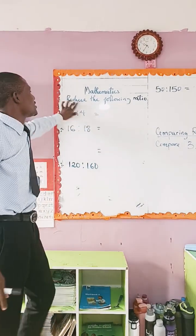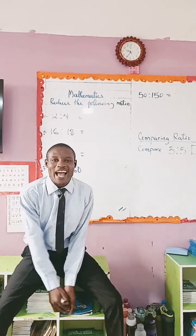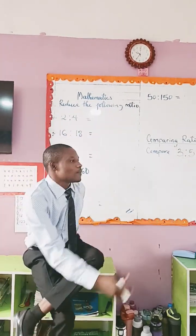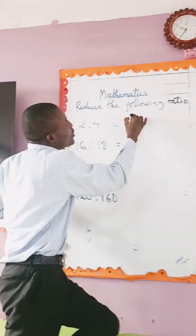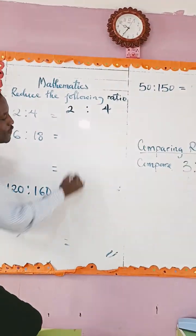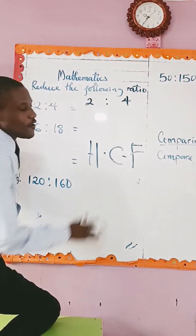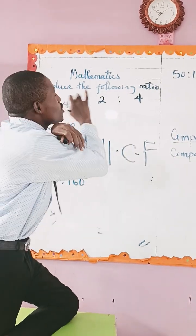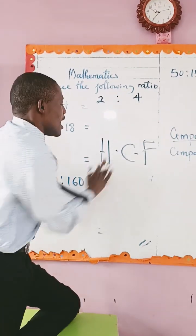We are looking at reducing ratios to their lowest form. So you have two numbers in ratio form. You find the highest common factor — a factor means a number that will divide these two numbers without a remainder.